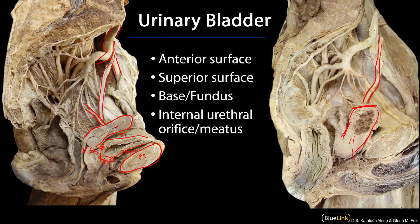We can see the urethra is kind of lost here and we pick it back up as we transition into the penis. This urinary bladder is intermediate between the pubic symphysis and posterior to it we're going to have the seminal vesicles, which are going to join with the ductus deferens to form the ejaculatory ducts, which are going to feed into the prostatic part of the urethra.